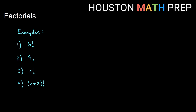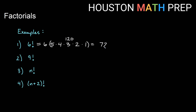Some examples here: if we want to find the value for six factorial, that means we start at six and multiply by every number below six until we get down to one — six times five times four times three times two times one. I know that five factorial was 120, so if I take 120 times six, I get 720 for this one.